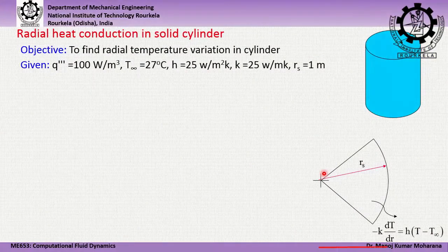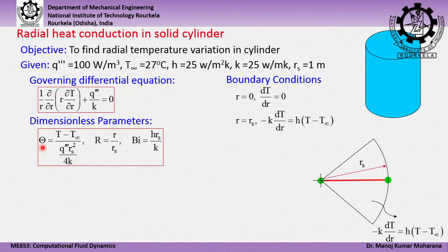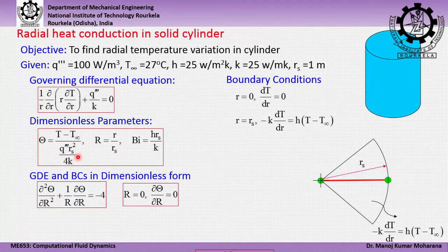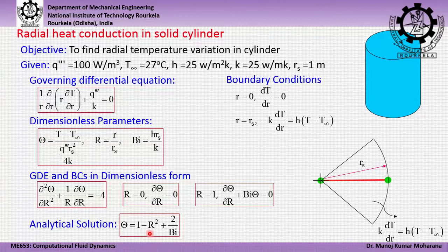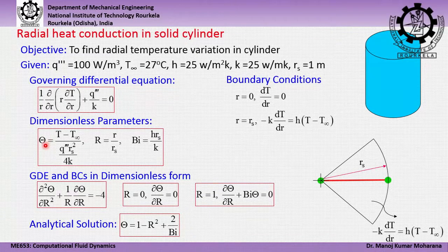I would like to make some corrections in the slide presented in the last class. In the dimensionless parameter considered, theta equals T minus T-infinity divided by q-triple-prime times r_s squared by 4k. Using this form, we obtain the analytical solution as theta equals 1 minus r-squared plus 2 divided by the Biot number. Other things remain as they are.